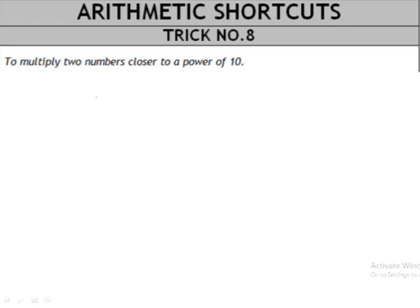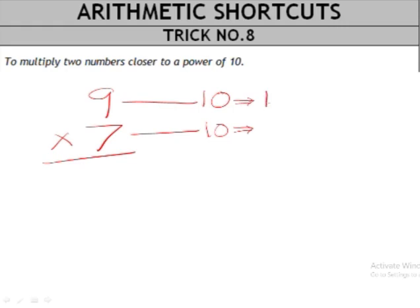For example, if we have to multiply 9 by 7, these two numbers are closer to a power of 10. Power of 10 in this case is 10 itself. So they are closer we mean that their distance from 10 is a smaller number that we can easily multiply. For example, if we look at this problem, so 10 minus 9 is 1 and 10 minus 7 is 3.